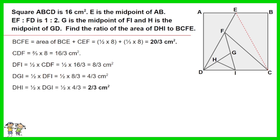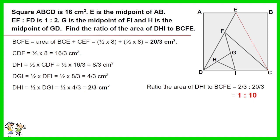DHI equals half of DGI equals half of 4 over 3 equals 2 over 3 cm squared. Therefore, the ratio of the area of DHI to BCFE equals 1 to 10.